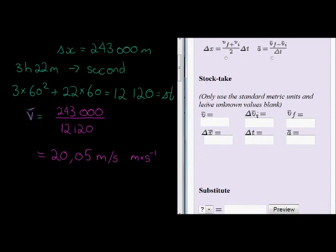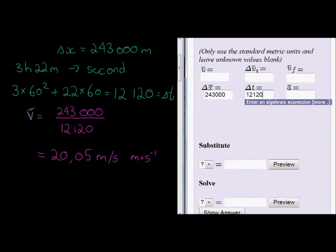Then the next is our stock taking step. Here they tell us only use the standard metric units, that's when we know we need to use meters and seconds. We do not know the average velocity yet. We do know the displacement. The displacement is 243,000, and here you can leave out the units. Then the time taken, how much time did it take? 12,120 seconds.